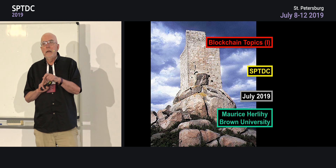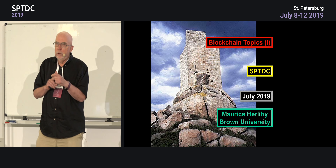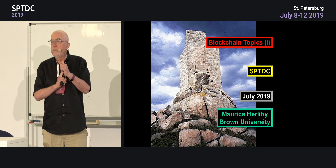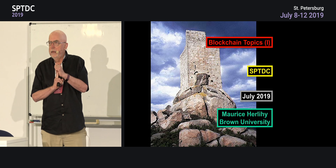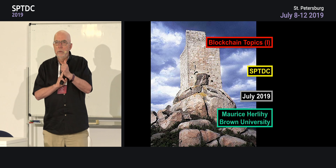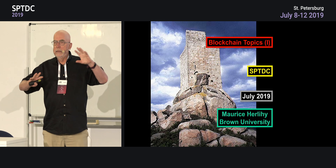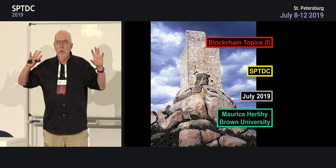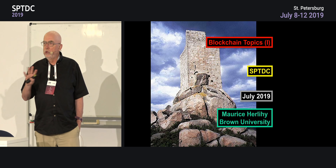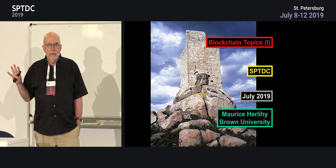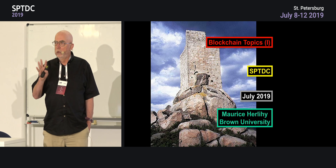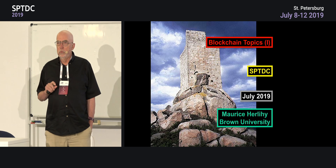I'm going to cover three topics. I'm going to talk about Bitcoin, because everybody wants to talk about Bitcoin. Then I'm going to talk about smart contracts, because that's what I think is really interesting in this field. And then I'm going to talk about cross-chain transactions and how living in a world where nobody trusts anyone means that we need to rethink our notions of correctness, and that our ideas of distributed transactions don't really translate into the modern world.